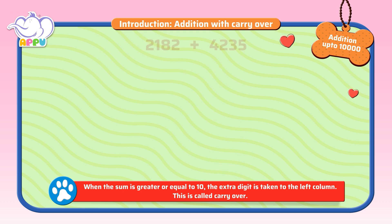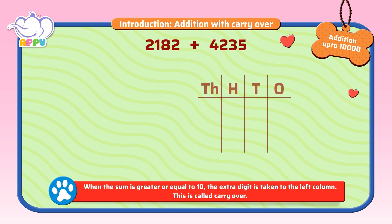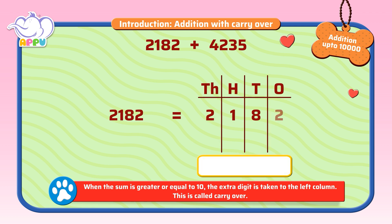Let's look at another example: 2,182 plus 4,235. We write it as thousands, hundreds, tens, and ones. We start adding the ones.